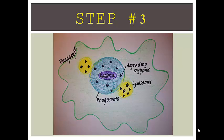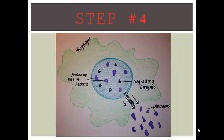Step 3, the lysosomes flood the phagosome and release the degrading enzymes into it. Step 4, the degrading enzymes break up the bacteria into bits and pieces which become antigens and are expelled out of the cell by exocytosis.